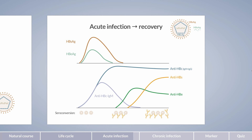This is called a window period, which we will get back to later on. The take-home points for this slide are: anti-HBc is the first antibody to increase and is used in conjunction with HBs antigen to confirm the occurrence of infection. Anti-HBe antibodies are the next antibodies to appear and are followed by anti-HBs antibodies, which are able to resolve the infection.